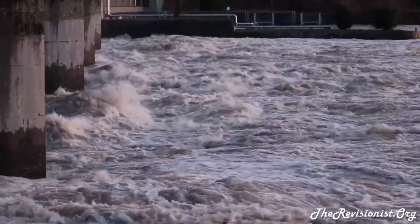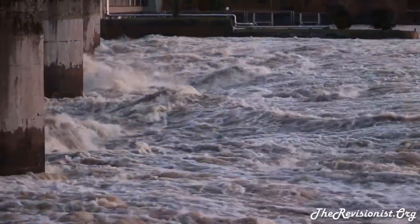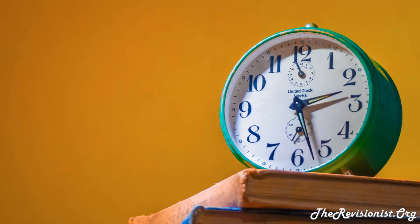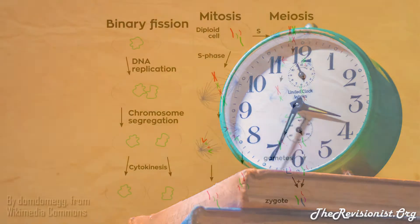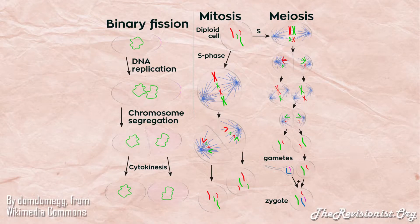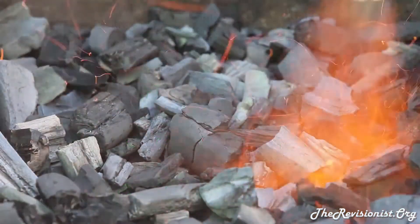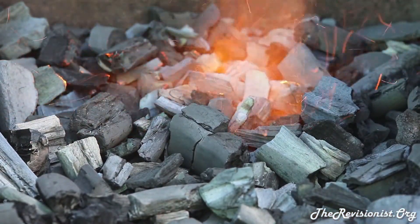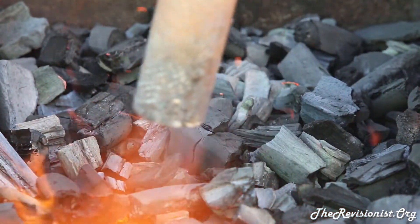Why does increased free radical exposure lead to shorter telomeres? Free radicals speed up the rate at which cells are lost in the body, which means the remaining cells are encouraged to replicate faster to replace the lost cells. Because telomeres are slightly shortened every time a somatic cell divides, increasing the rate of cell division increases the rate at which telomeres become smaller. Generally, anything that increases oxidative stress increases the rate at which telomeres are shortened on our chromosomes.